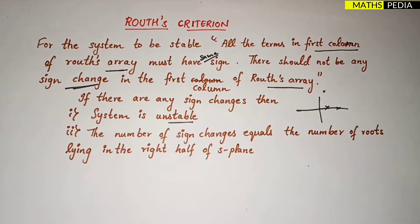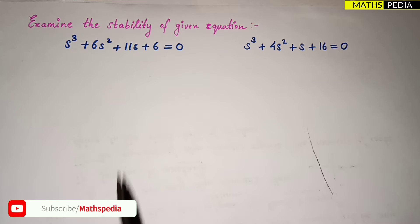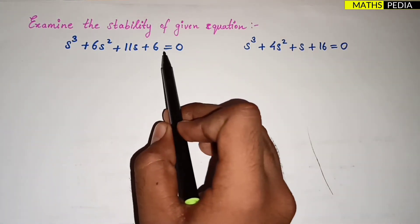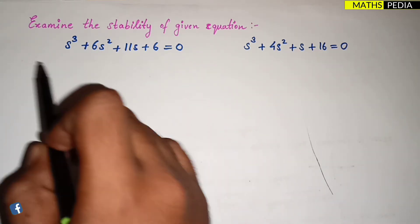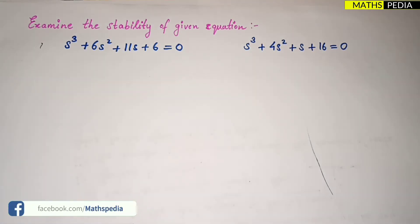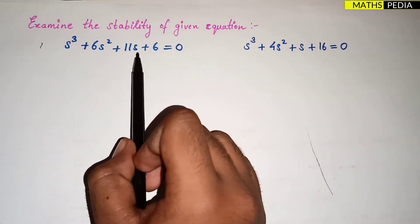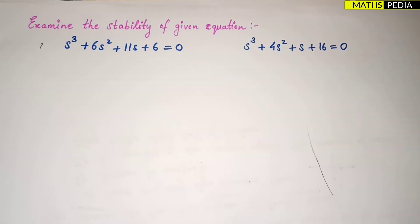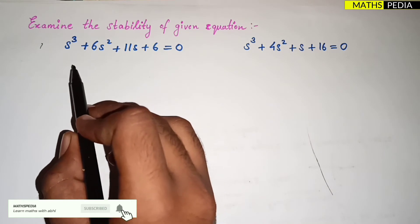To understand these points, let us look at two problems. Problem one: s³ + 6s² + 11s + 6 = 0. Problem two is also given. We need to examine the stability of each given equation.